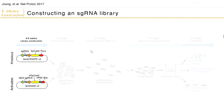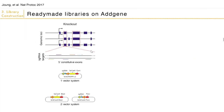Starting with the library construction — depending on whether you're picking an existing library or designing your own, this can take anywhere from a few weeks to many more weeks. Starting with the easy parts: the ready-made libraries on Addgene. Right now there are a lot of different libraries available. I'll talk about what our lab has put out and also mention some of the newer ones I would recommend.